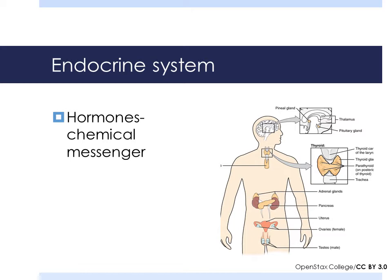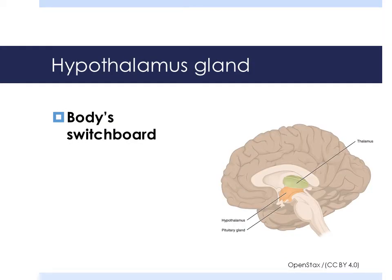Endocrine glands are a special group of cells that make these hormones. The hypothalamus is known as the body's switchboard. It tells the pituitary gland what to do. It receives information from nerves around the body and then regulates release of hormones from the pituitary.